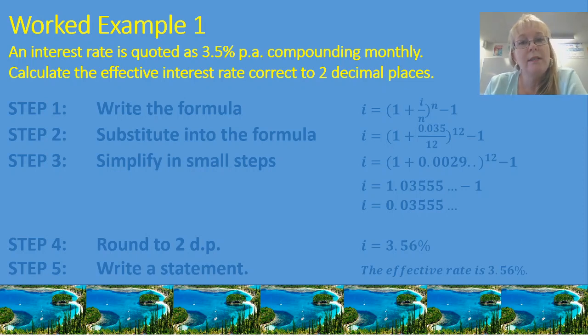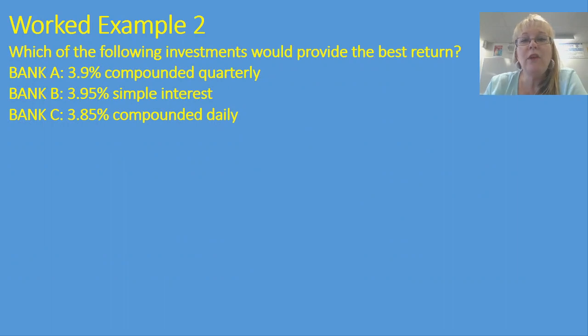Let's look at a second worked example. Which of the following investments would provide the best return? I've got Bank A: 3.9% compounded quarterly; Bank B: 3.95% simple interest; and Bank C: 3.85% compounded daily. Well, I can take a guess just looking at that, that the Bank A value is probably going to give me the best return. And the reason I know this is that compound interest is always better than simple interest. So I'm guessing that that 3.9% is going to do a better thing for me than the 3.95% simple interest.